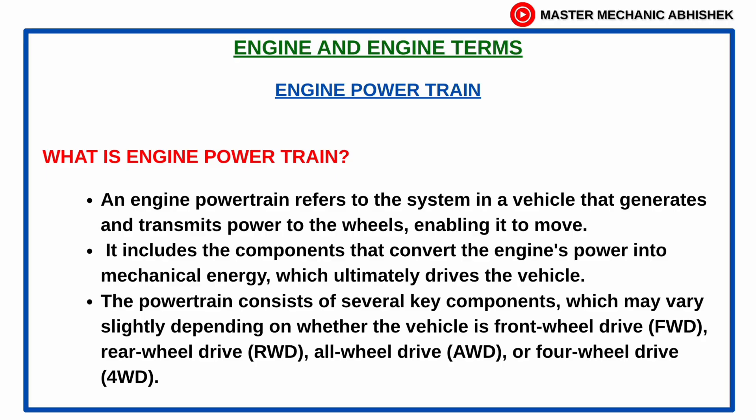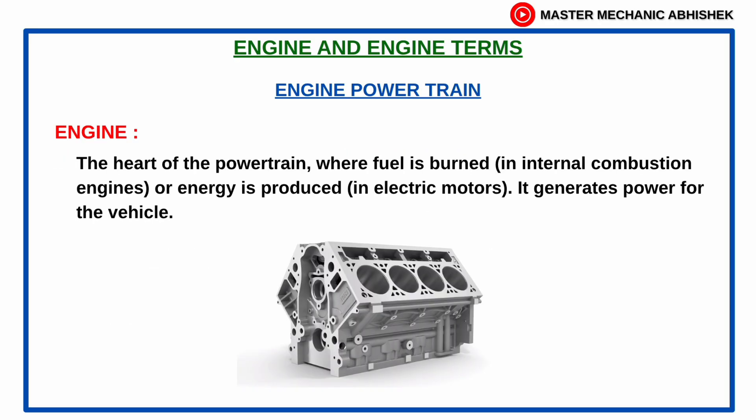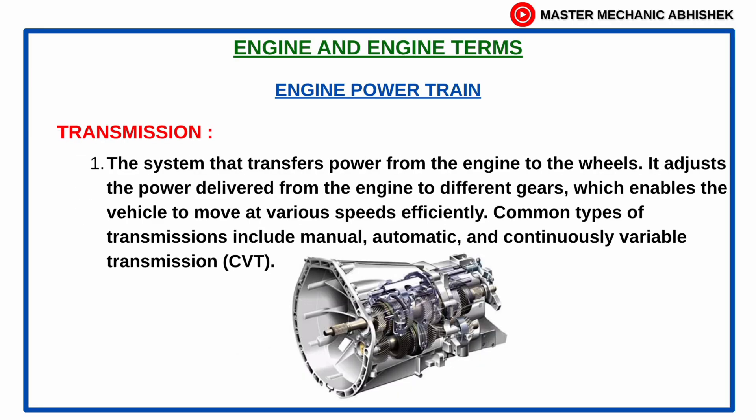The major components of a powertrain typically include: engine, transmission, axles, differential, drivetrain, and final drive. The engine is the heart of the powertrain, where fuel is burned in internal combustion engines or energy is produced in electric motors. It generates power for the vehicle.